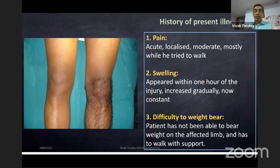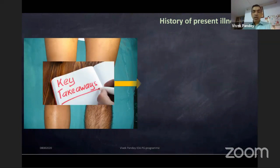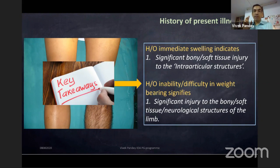Swelling appeared within an hour of injury and increased gradually, and is now constant. The key takeaway: immediate swelling always indicates a significant bony or soft-tissue or both injury to intra-articular structures. Extra-articular structures do not cause joint swelling — they cause extravasation, so swelling is all around but not in the joint.